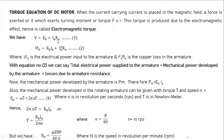For a motor, we have V = Eb + Ia·Ra. Multiplying both sides by Ia: V·Ia = Eb·Ia + Ia²·Ra. We can compare this with our input-output efficiency equation: V·Ia is the electrical input, Eb·Ia is the mechanical power output developed by the armature, and Ia²·Ra is the loss. So input = output + losses.